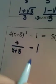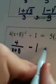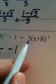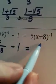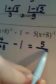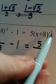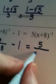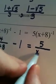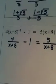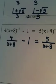Minus 1 — there's not much we can do there. And on the right side, the same thing happens. The 5 stays in the numerator, and where would the x plus 8 go? Because it's raised to the negative first power, it would go to the denominator. So our first step in this equation involves getting rid of the negative exponent.